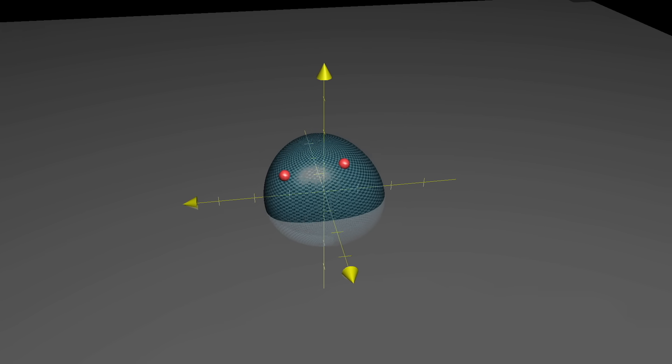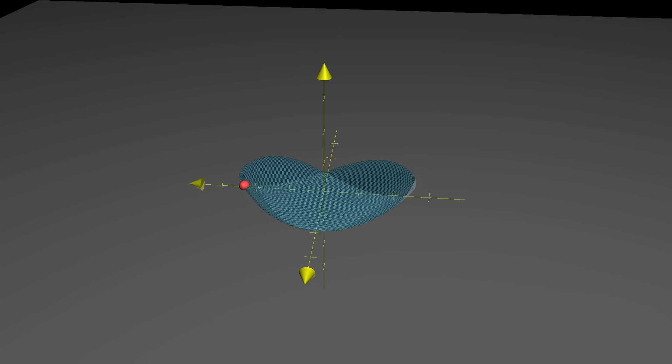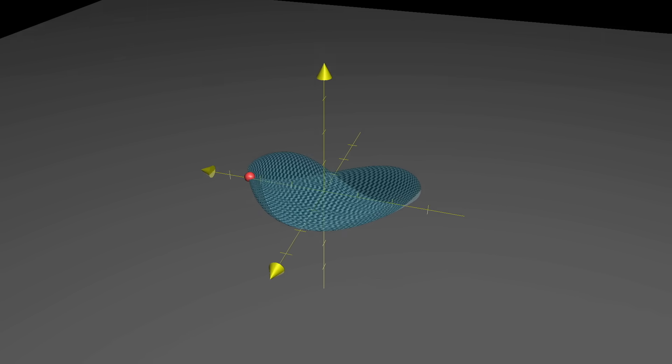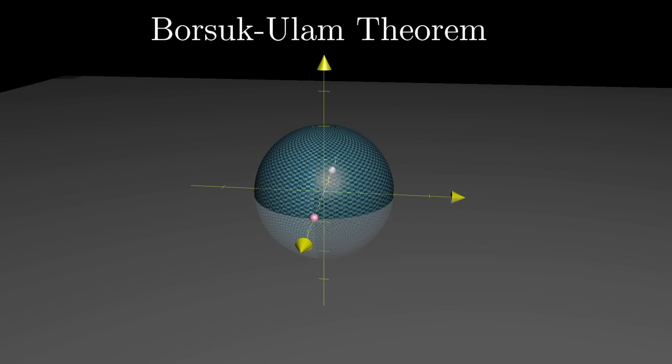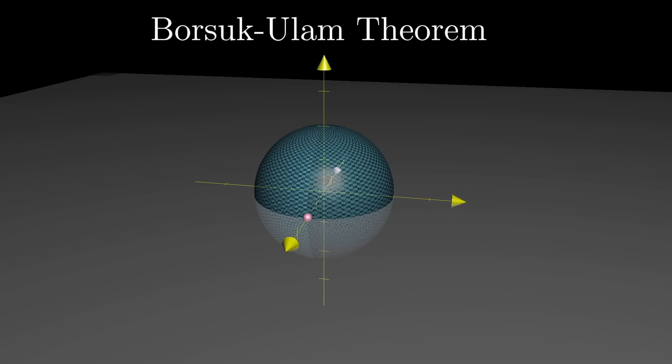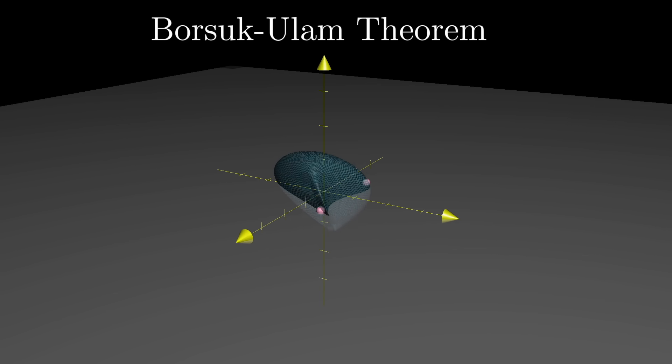As you do this, many different pairs of points will land on top of each other once they hit the plane. The special fact we're going to use, known as the Borsuk-Ulam theorem, is that you will always be able to find a pair of points that started off on the exact opposite sides of the sphere, which land on each other during the mapping.